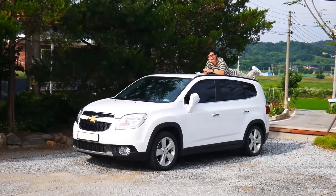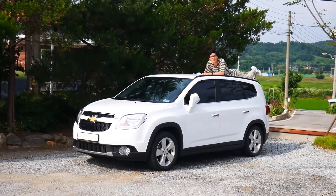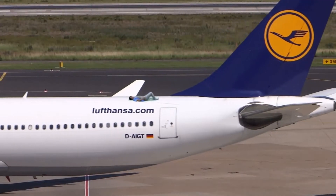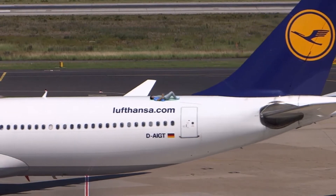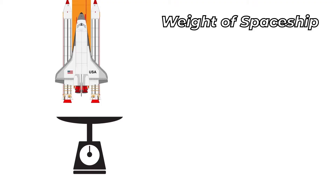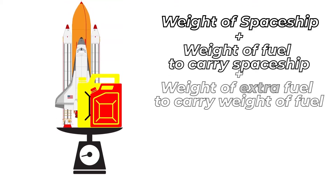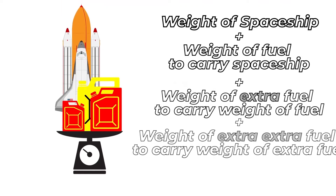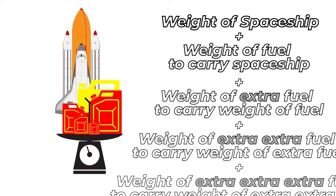Because rockets are constantly fighting against gravity and have to carry all of their fuel at once, they hold a seriously large amount of fuel. Over 90% of a rocket's weight is fuel. A normal car is only about 4% fuel. Also, the required amount of fuel increases exponentially as more weight is added.